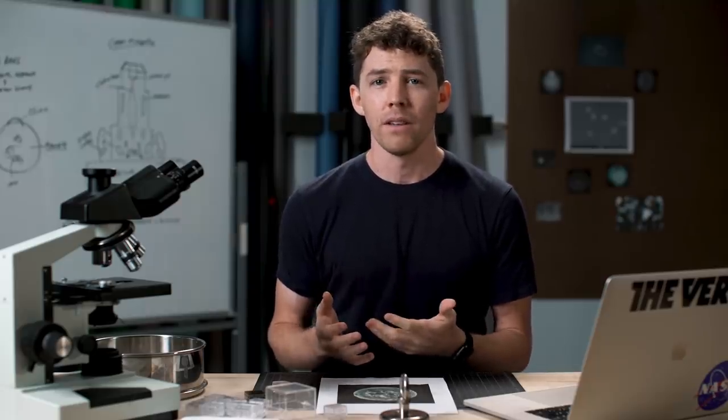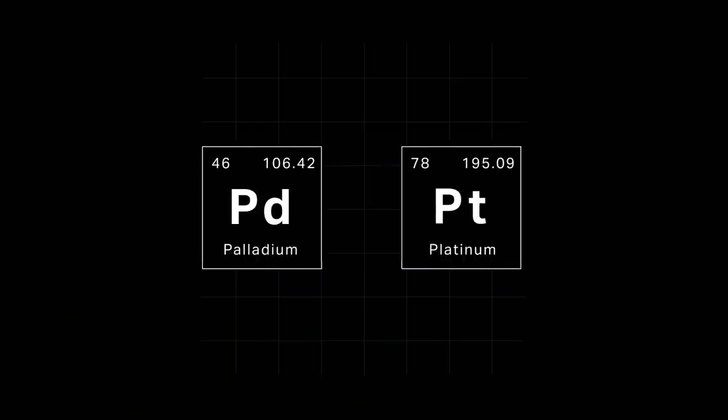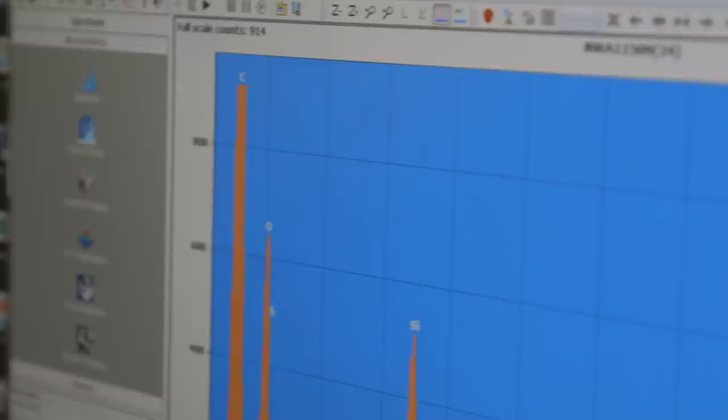The material makeup of our samples were less encouraging. IDing a meteorite often means finding elements that are rare on Earth's surface but common in space. Things like palladium, platinum, uranium. But sample after sample, we saw very earthly elements: iron, oxygen, silicon.